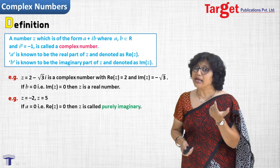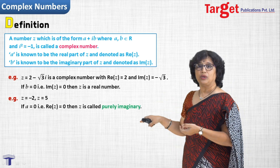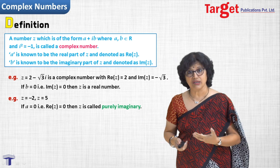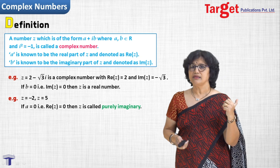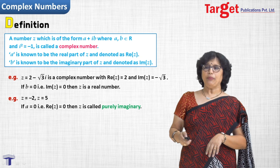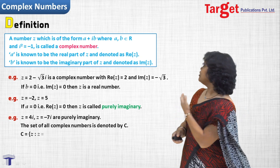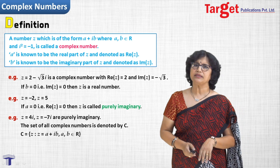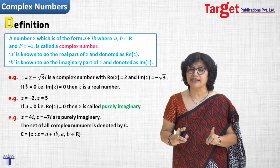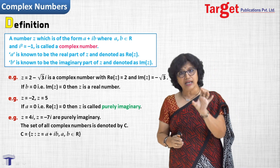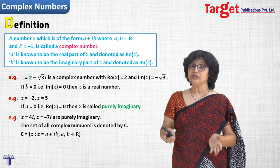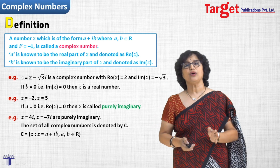On the other hand, if a equals 0, only the bi part remains and the number is called a purely imaginary number. For example, z equal to 4i and z equal to 7i are purely imaginary. To summarize: every real number is a complex number, and hence the set of all real numbers is contained in the set of complex numbers.